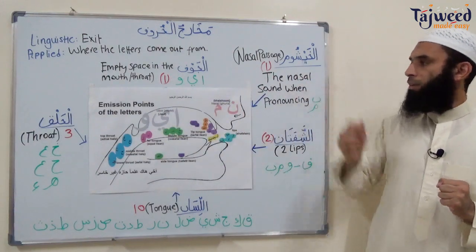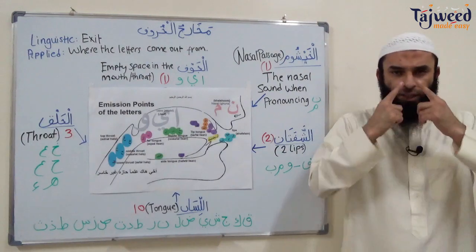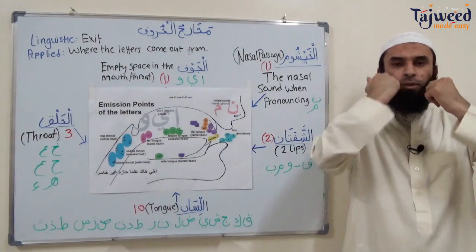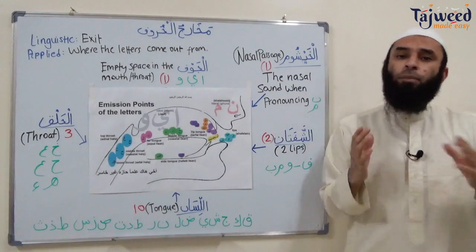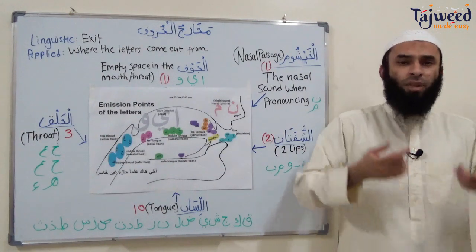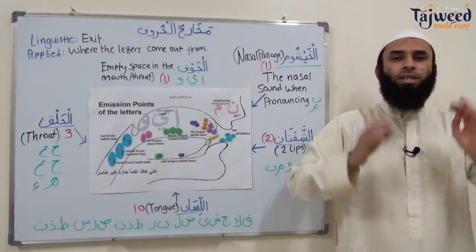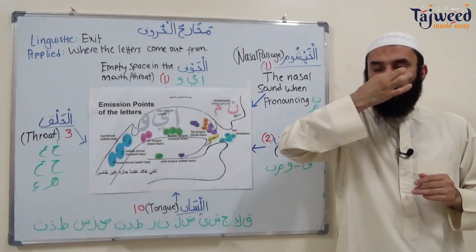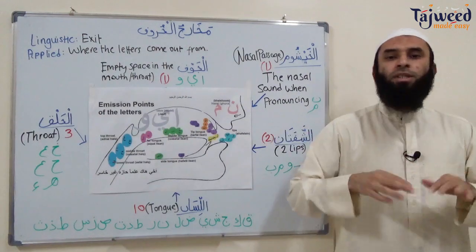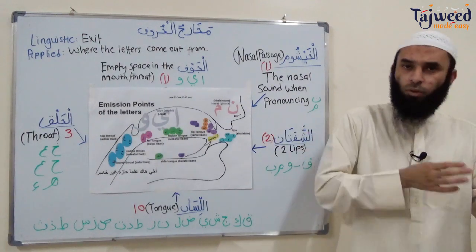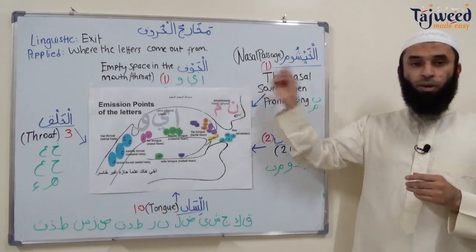Number two is الْخَيشُوم, which is the nasal passage — the sound that comes from the nostrils going downwards. نُون and مِيم. It is impossible to pronounce نُون and مِيم without a natural sound that comes from the nose. So two letters, one مَخْرَج point.